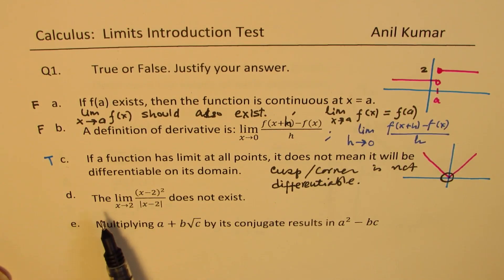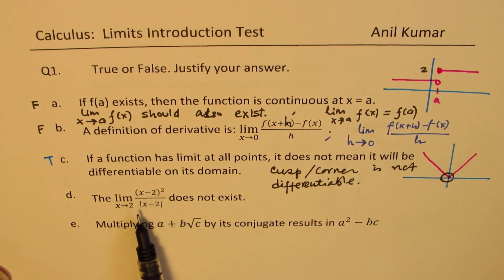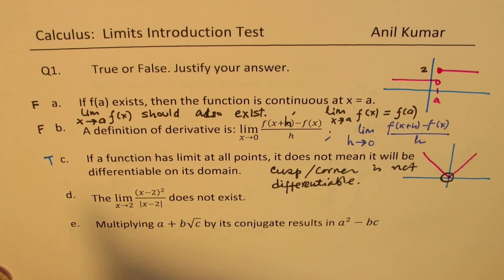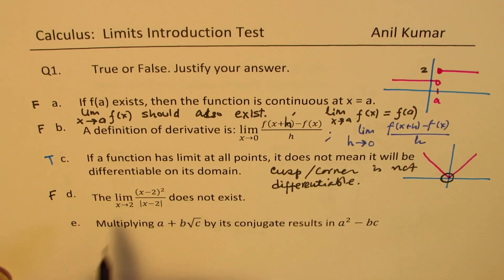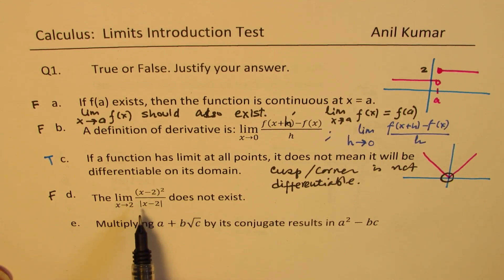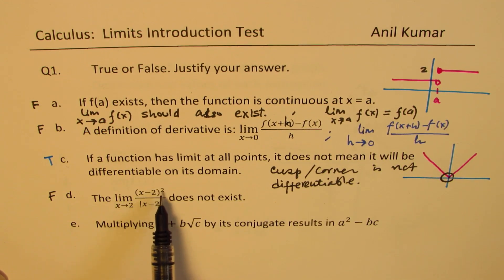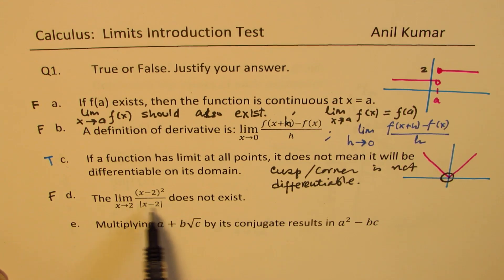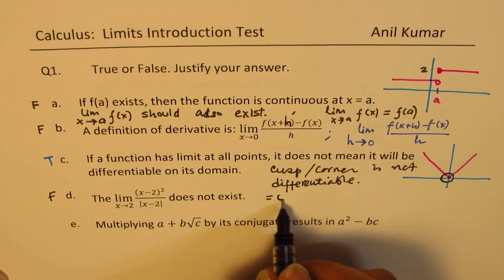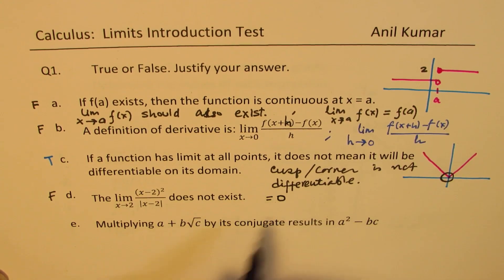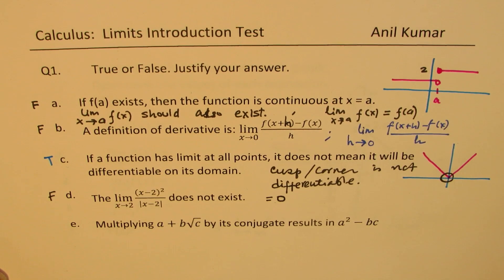D: The limit when x approaches 2 for x minus 2 whole squared divided by absolute value of x minus 2 does not exist. This statement is false — this limit does exist. As you can see, x minus 2 whole squared over the absolute value of x minus 2, when approaching 2 from either side, it is going to be 0. So it exists and is equal to 0.